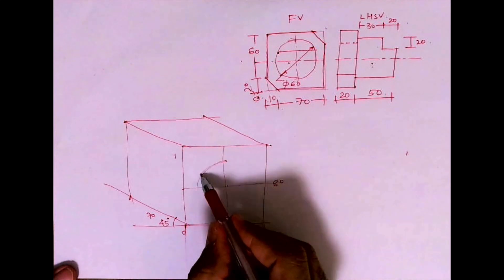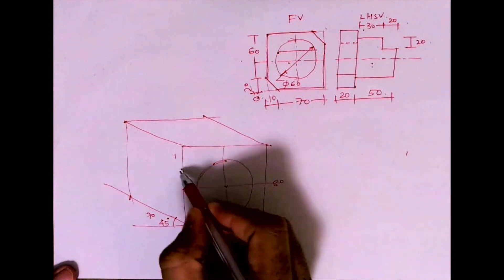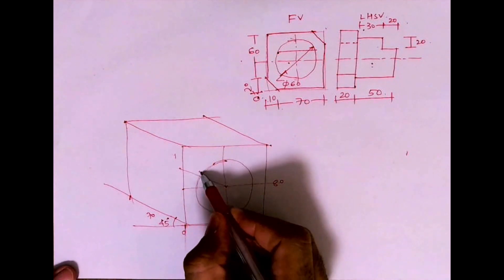Whatever they have given, radius 30, so find the center and draw radius 30. And how much you have to go behind? You have to go behind by 50.